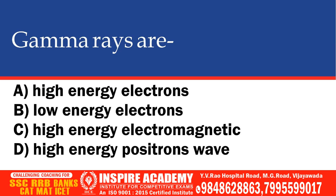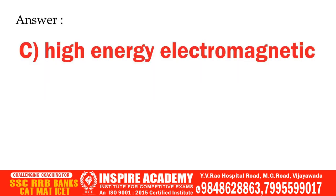Gamma rays are: high energy electrons, low energy electrons, high energy electromagnetic radiation, or high energy positron waves. And the correct answer is high energy electromagnetic radiation.